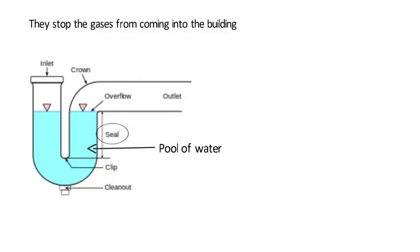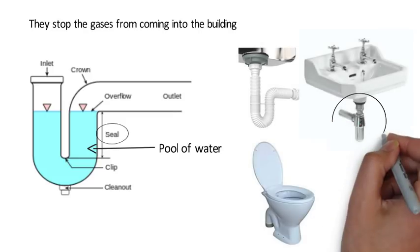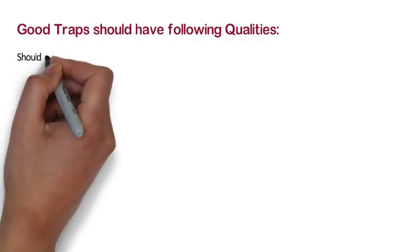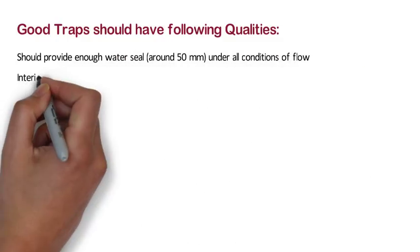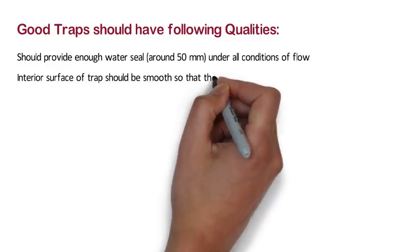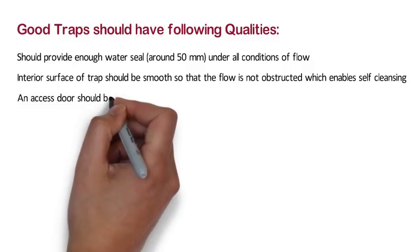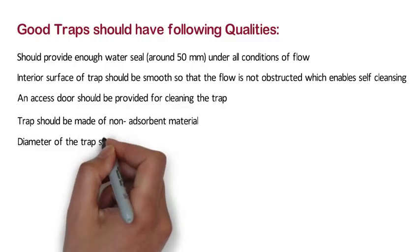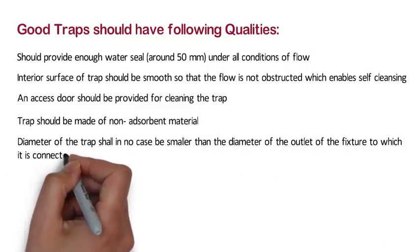Therefore, all plumbing fixtures such as sinks, wash basins, bath tubs and toilets are equipped with traps. Good traps should have the following qualities: the trap should provide enough water seal of around 50 mm under all conditions of flow; the interior surface should be smooth so that flow is not obstructed, enabling self-cleansing; an access door should be provided for cleaning the trap; the trap should be made of non-absorbent material; and the diameter of the trap shall in no case be smaller than the diameter of the outlet of the fixture to which it is connected.